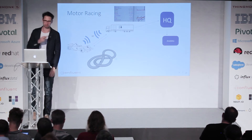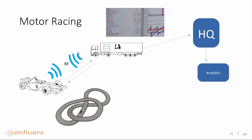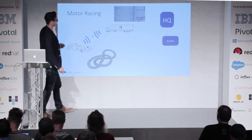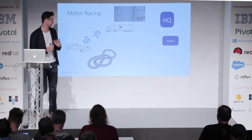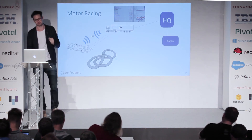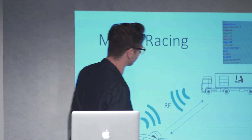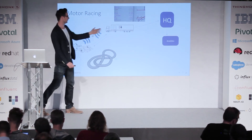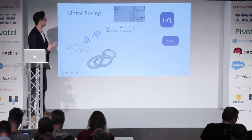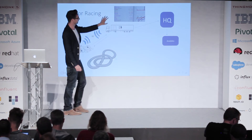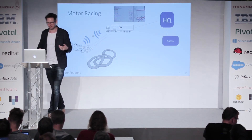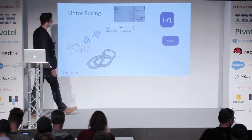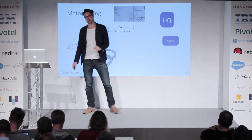Motor racing is a completely different use case. A truck turns up at the track with a small data center and some analysts, and they connect to the cars via an RF protocol. That protocol dumps data — there are obviously a very large number of sensors on a racing car — and these get dumped into Kafka and then analyzed in a streaming fashion, so they can feed information back to the pit to help the racing drivers make better decisions. All of that data then gets shipped back to HQ where they do further analytics after the race.